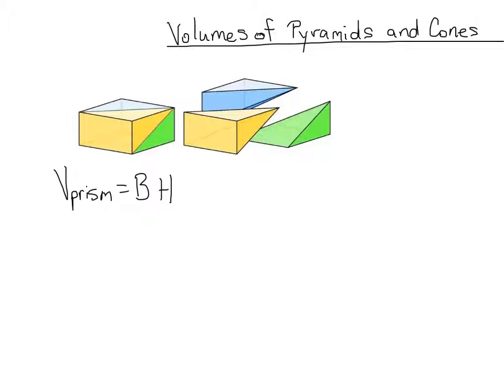So with that in mind, the volume of a pyramid is actually quite simple if you know that fact. It's actually just one-third the volume of a prism. So one-third times base times height. All right, now with that in mind let's go ahead and try an example.